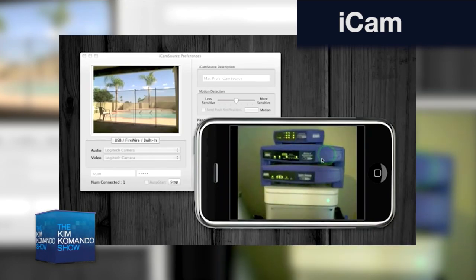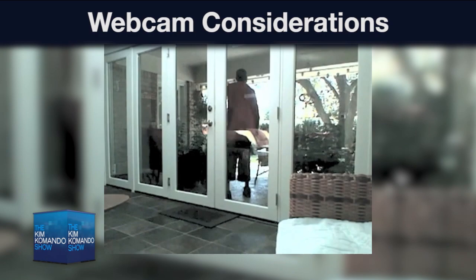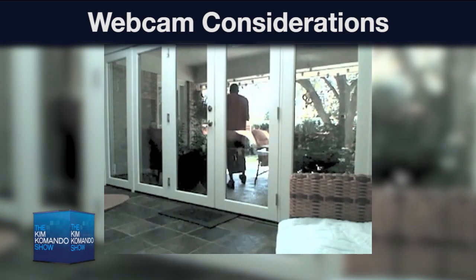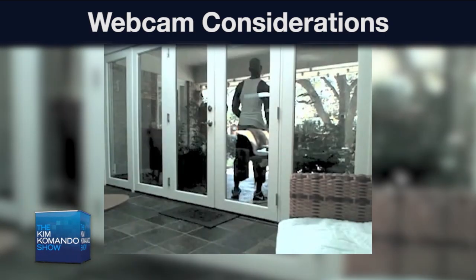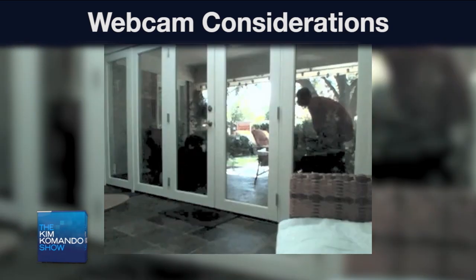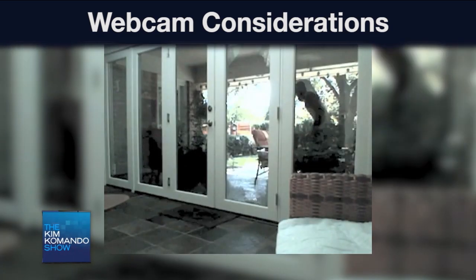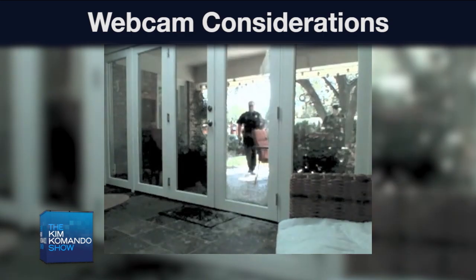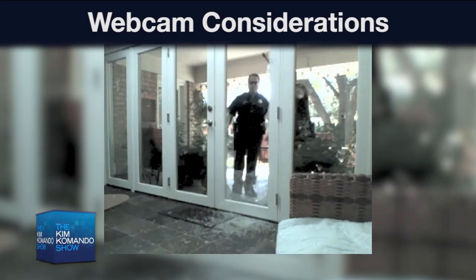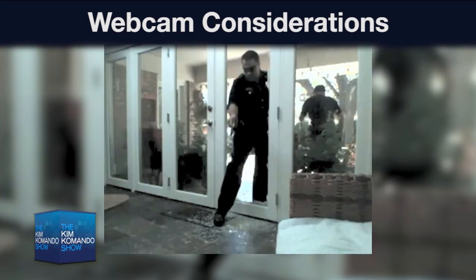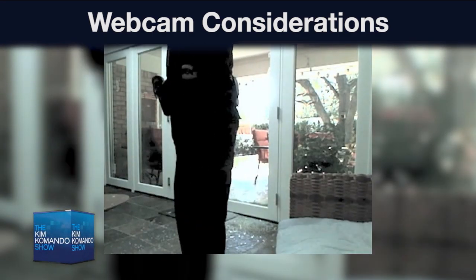If you don't have a webcam and want to buy one, there are certain things to look at. Image quality — you want 720p HD. Night viewing is super important, because inexpensive webcams have low light recording problems, making them nearly useless. You also want motion sensing, pan and tilt and zoom. And when one webcam just won't cover it, that's when you want to look at multi-cam surveillance systems.